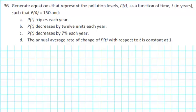Generate equations that represent the pollution levels p of t as a function of time t in years, such that p of 0 is equal to 150 and p of t triples each year. Let's start by making a table of values and then we'll look for a pattern to write the equation.